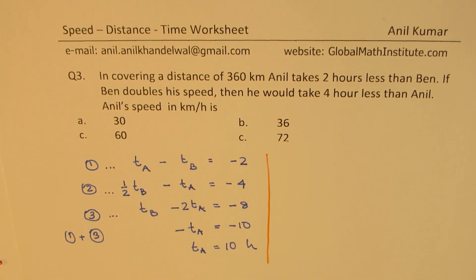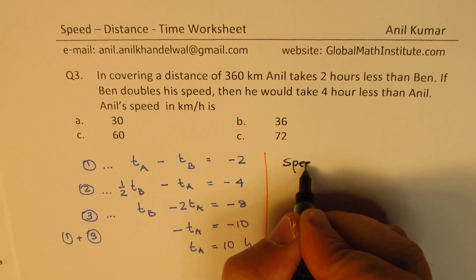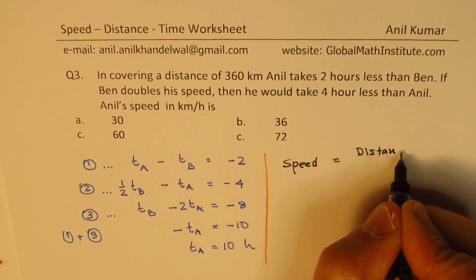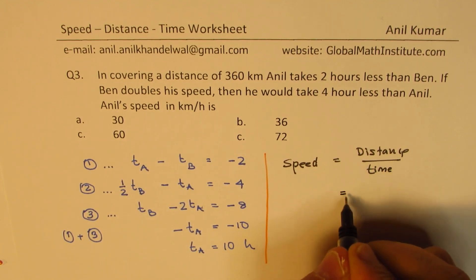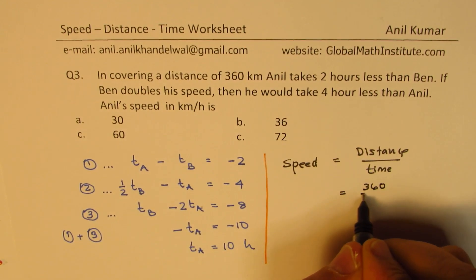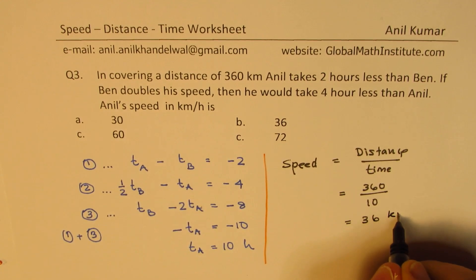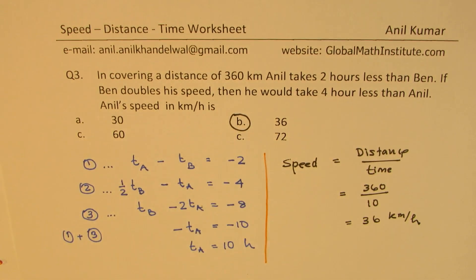We need to find the speed. Speed equals distance divided by time — 360 divided by 10 — which is 36 kilometers per hour. That is option B. You see how we could solve this? That is how you can solve such questions — the strategy is absolutely clear.